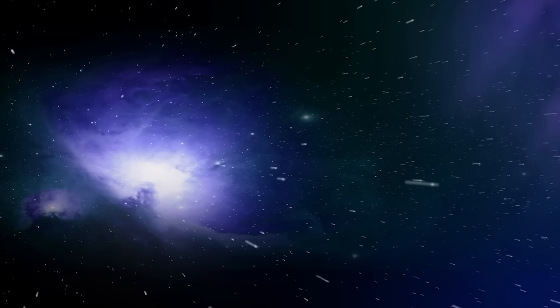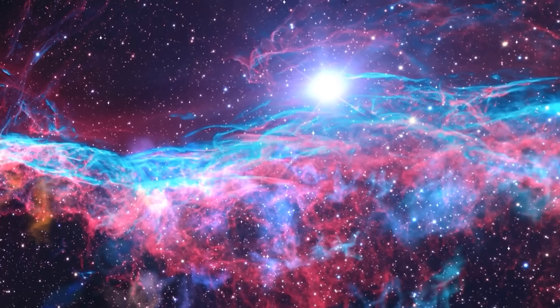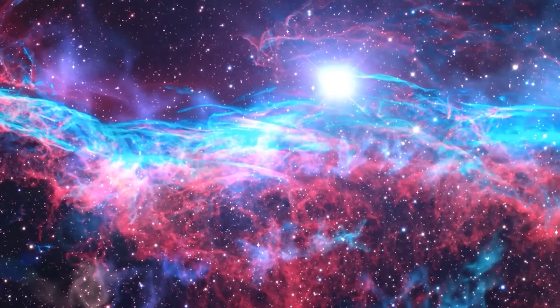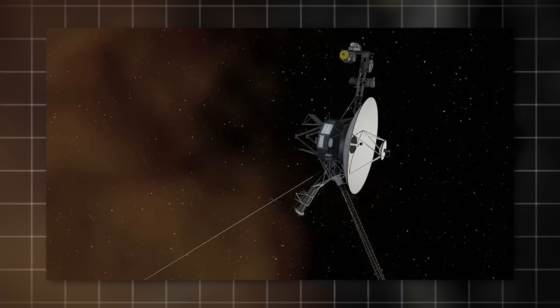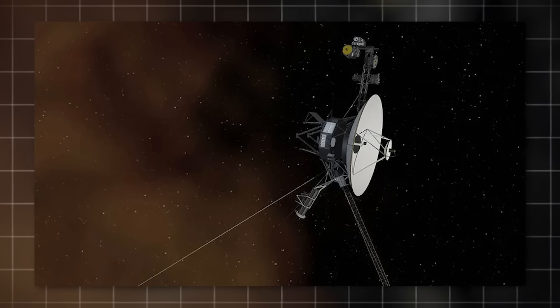As it ventured beyond the heliosphere, the vast bubble of solar particles and magnetic fields that surrounds the solar system, Voyager 2 entered a region once considered largely empty, cold, and uniform.